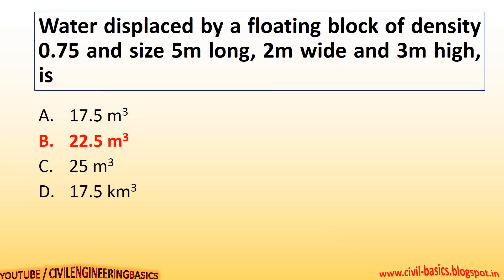Water displaced by a floating block of density 0.75 and size 5 meters long, 2 meters wide and 3 meters high is 22.5 cubic meters.